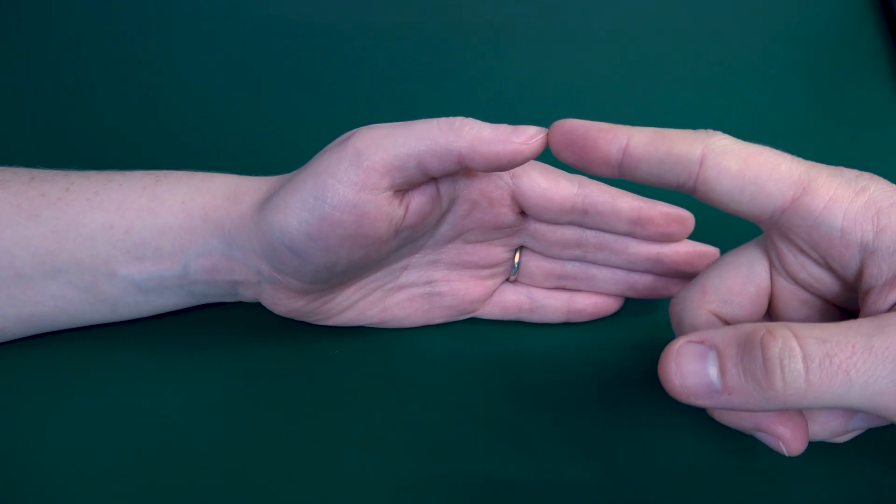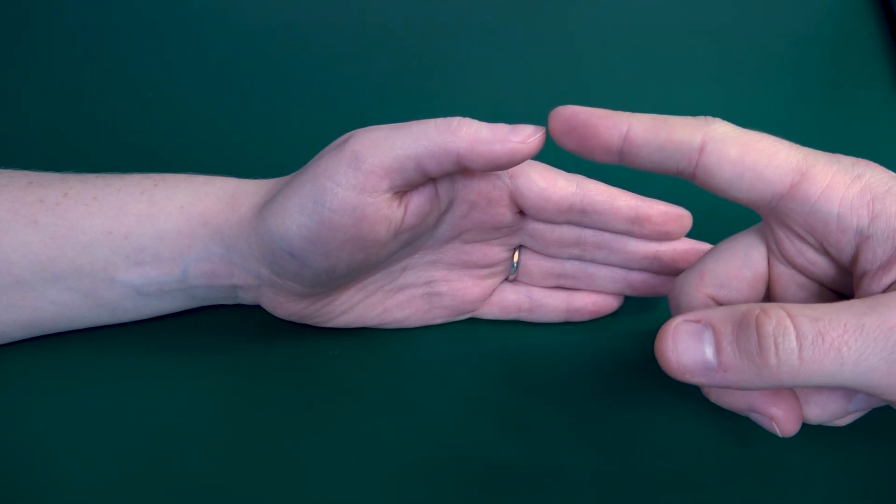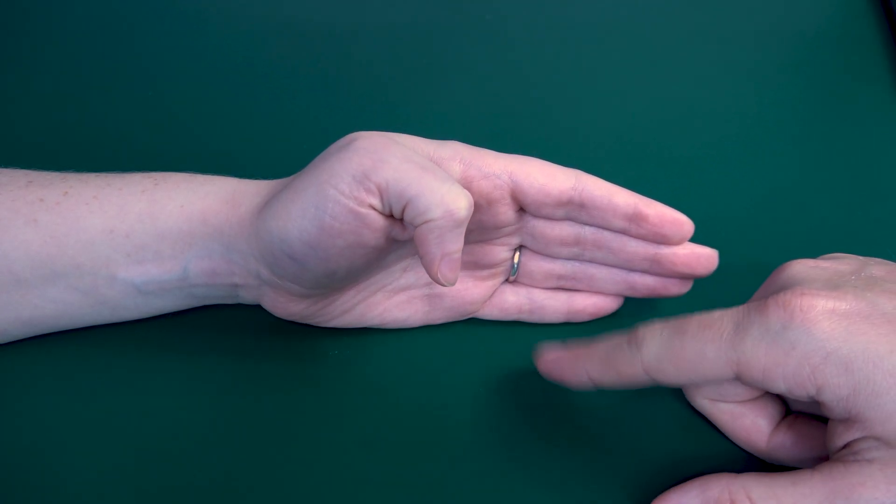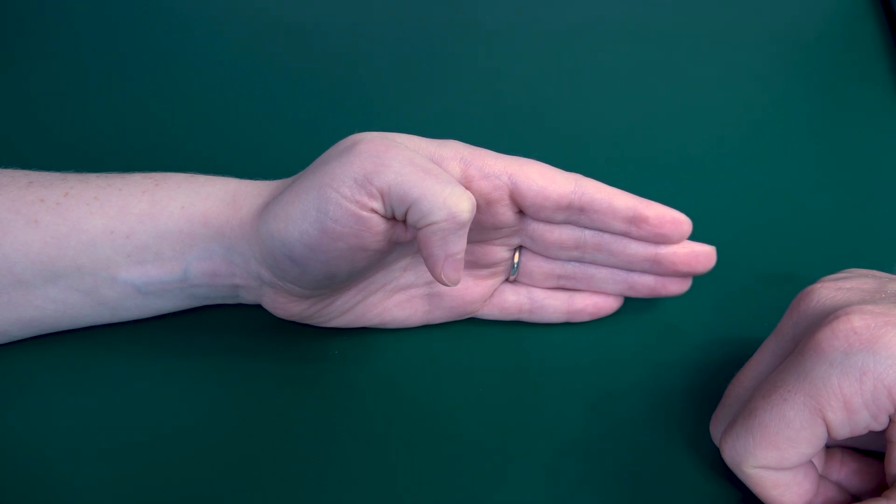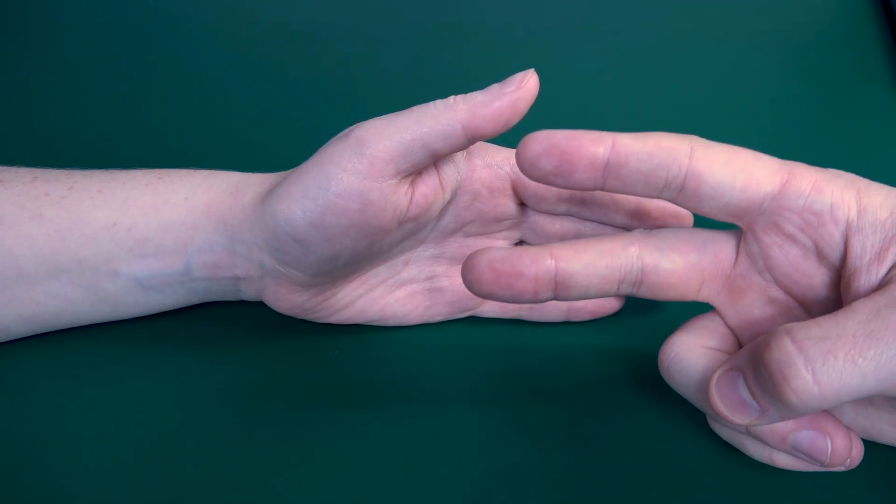So you'll have her in this position and you will ask the patient to curl their thumb towards the ground as far as they can go. And because she's able to do this, that would be a grade two.